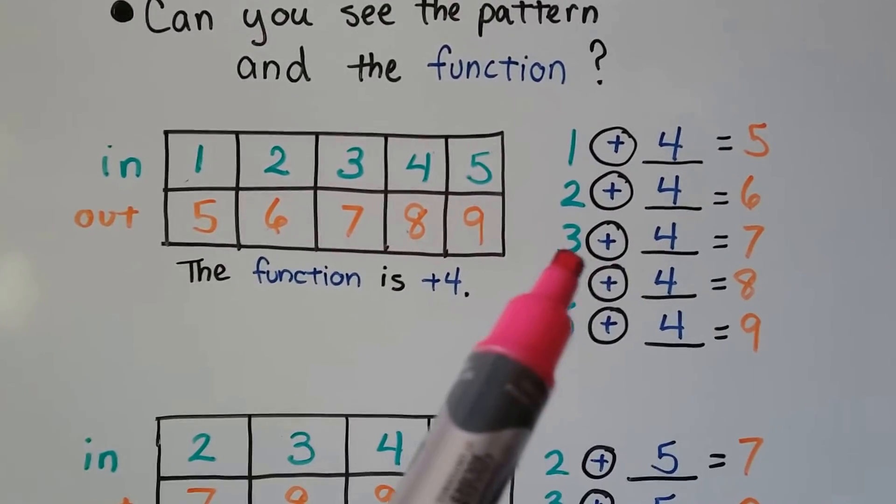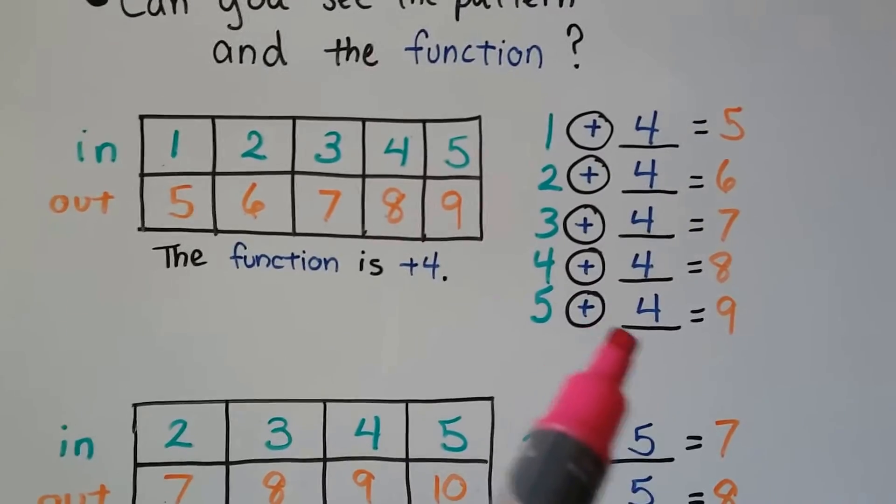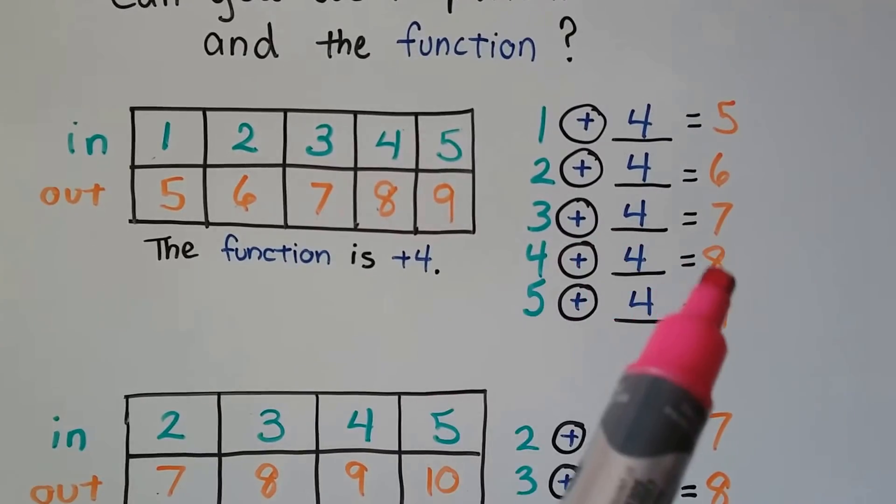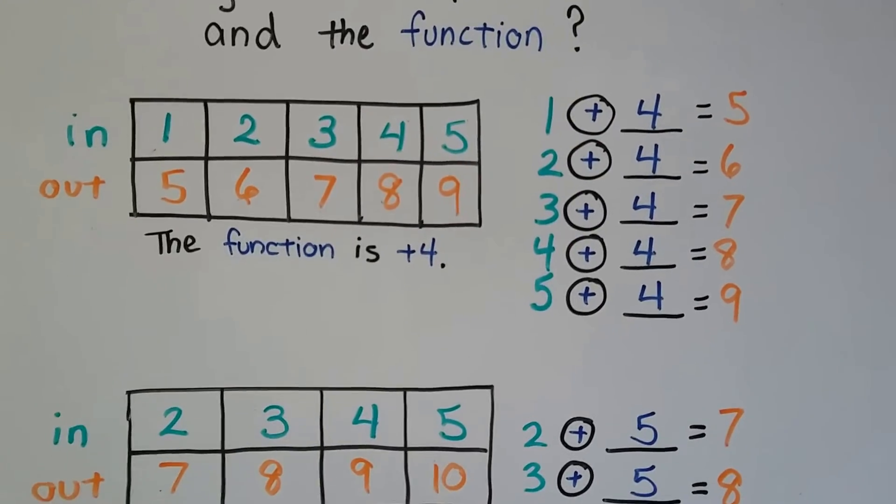The function stays the same, it's all plus 4. And then the number that goes in has that function happen to it, and then we get a number coming out.